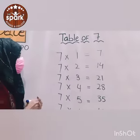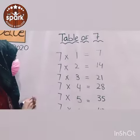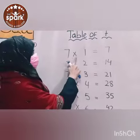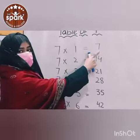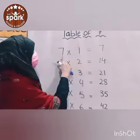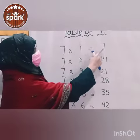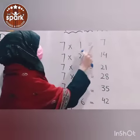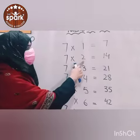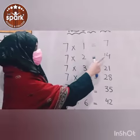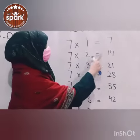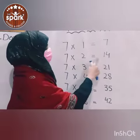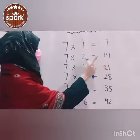Okay, let's start. Read with me. 7 ones are 7. 7 ones are 7. 7 twos are 14. 7 twos are 14.